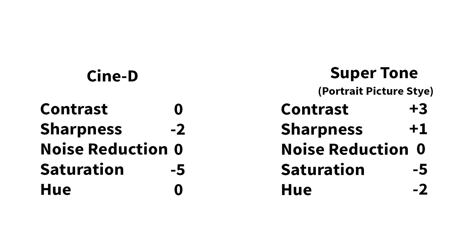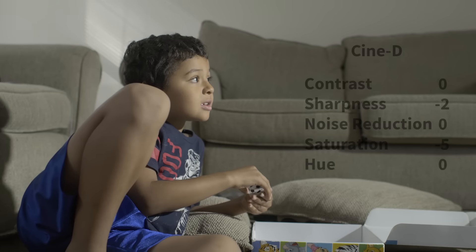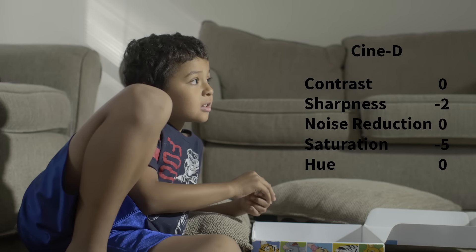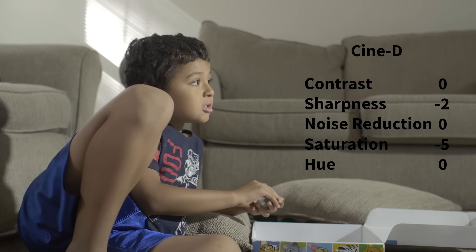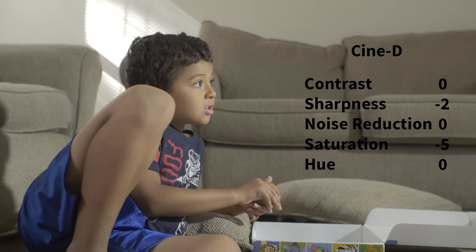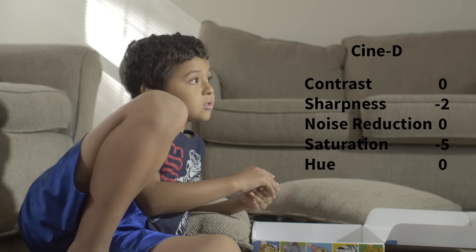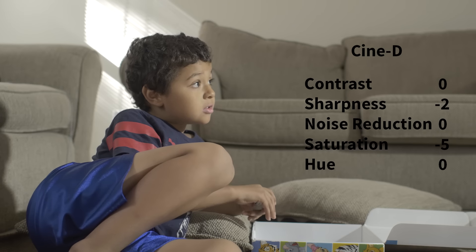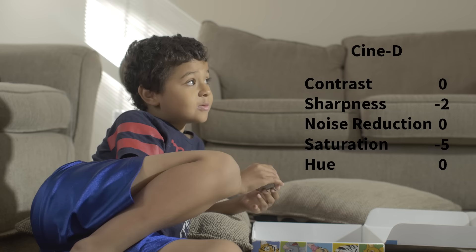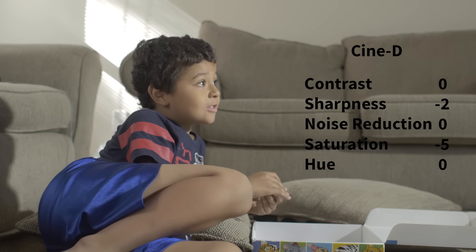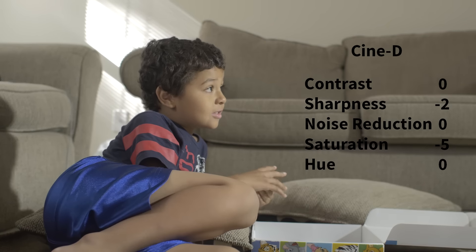Super Tone is essentially the portrait picture style, adjusted to get good-looking skin tones and the least amount of noise. The very first shot is actually the Cine D profile — you can see it's really flat, gives you a nice flat look, like a cine style. It can also match log footage if adjusted somewhat more to get even flatter, so you can match cameras.